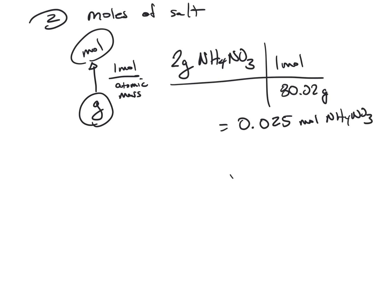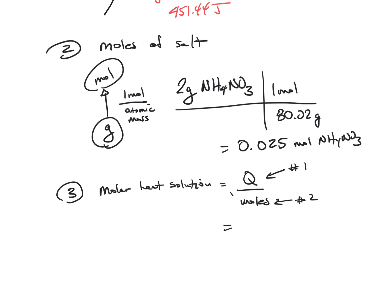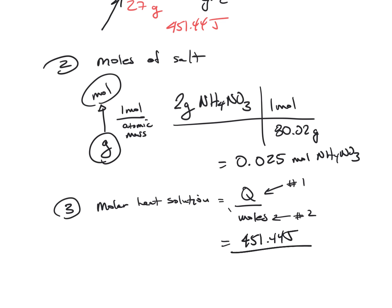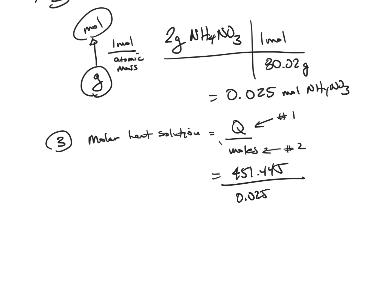You're going to want to do this for each one of your salts. The very last step is we're going to calculate the molar heat of solution using the two answers above. The molar heat of solution is Q divided by moles. That's the answer for number one and your moles is your answer for number two. So I had 451.44 joules divided by my moles, which I found to be 0.025 moles. When I divide those two together, I get 18,062.3 joules per mole. That's my value. Now we're going to need to do this for each one of our salts.